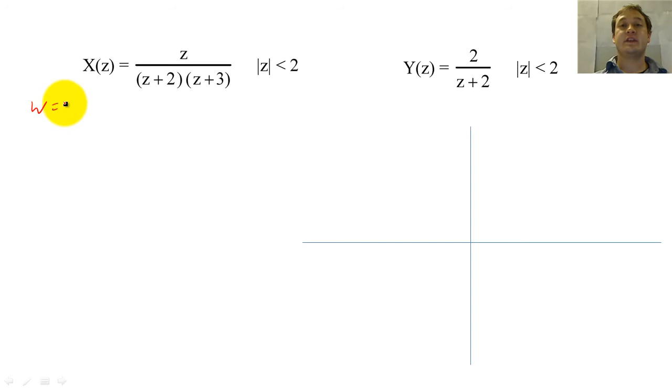The Z-transform is a linear function. If we add two sequences together, then we can add their Z-transforms.